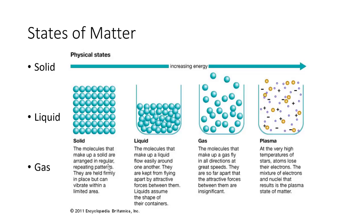Looking at the diagram, the solid state of matter has a regular repeating pattern and molecules are held firmly in place. In a liquid, molecules flow around each other with attractions between them that keep them from flying apart, and liquids form the shape of their containers. Gas molecules fly in all directions at great speeds and don't have many attractive forces.